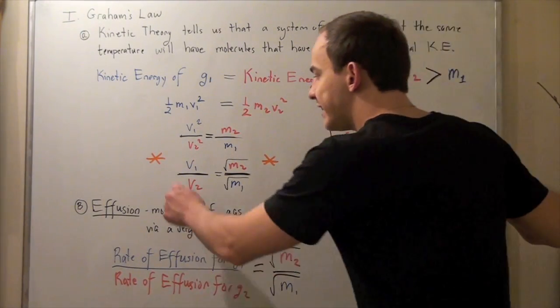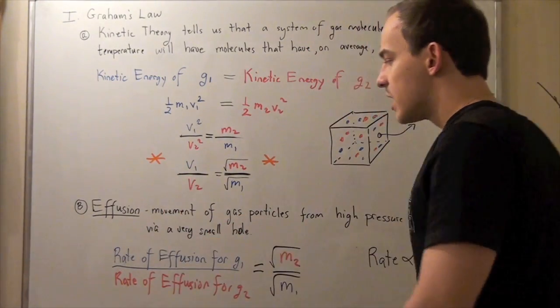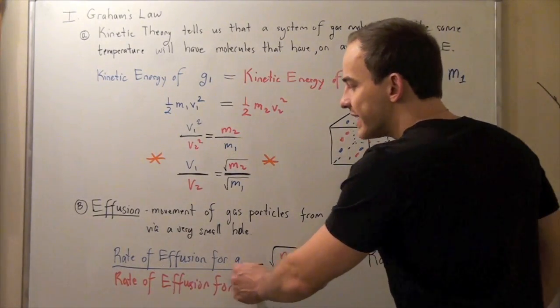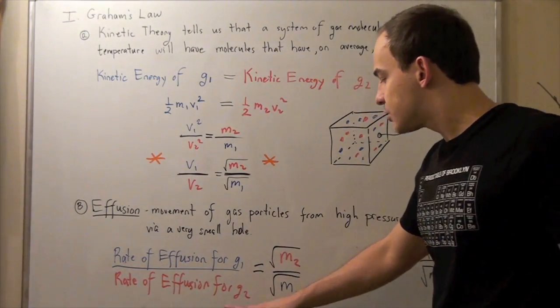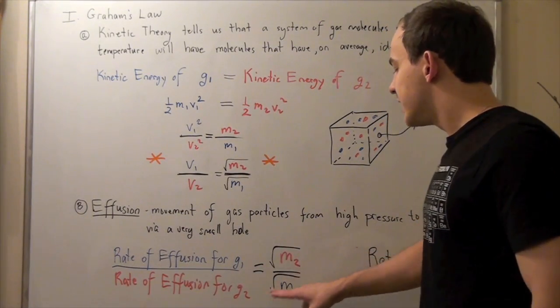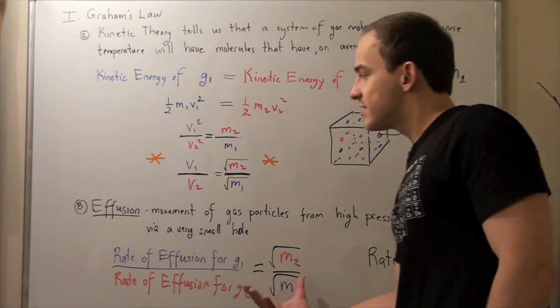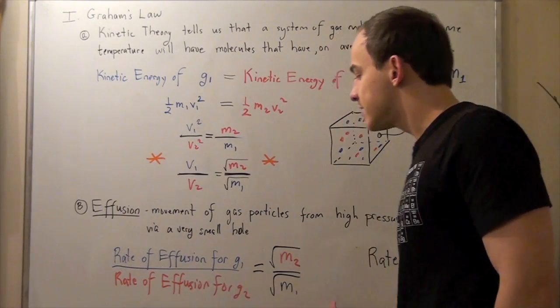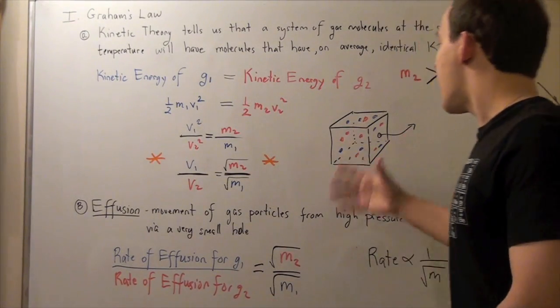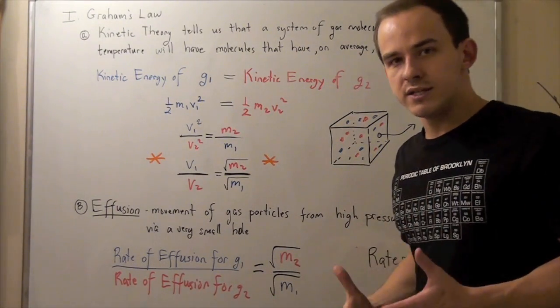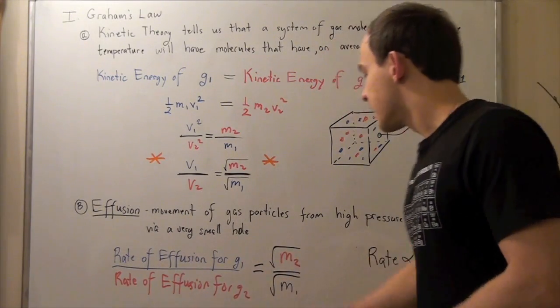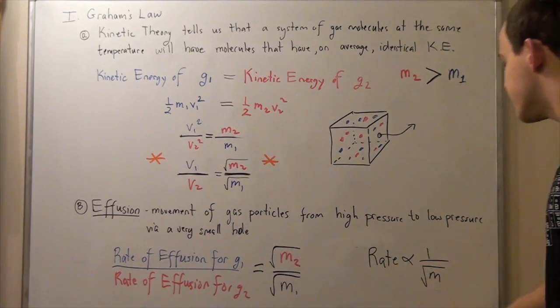So we can rewrite these velocities as rates. The rate of effusion for gas 1 divided by the rate of effusion for gas 2 is equal to the square root of m2 divided by the square root of m1. And what this equation tells us, which is, by the way, Graham's equation or Graham's law, is that the heavier the molecule is, the smaller its speed, and therefore, the smaller its rate.